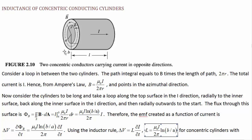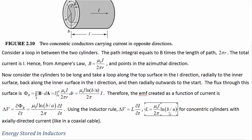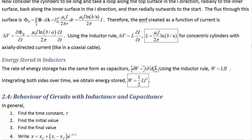Energy stored in inductors: like capacitors, inductors store energy. The rate of energy storage has the same form. Using the inductor rule — voltage equals L times the rate of change of current — and substituting that the rate of change of charge is the current, we rewrite power as W-dot = L i-dot times i. By the chain rule, this is the derivative of one-half L i-squared. Integrating both sides gives W = one-half L i-squared.